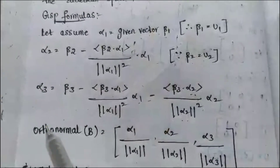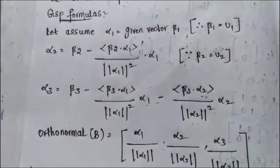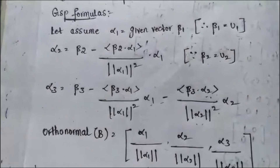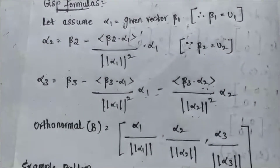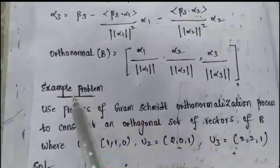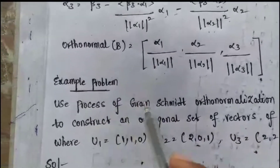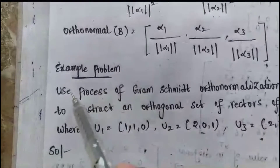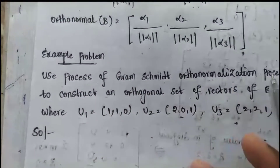Using the above formulas, we convert the problem from orthogonal vectors into orthonormalized vectors. Consider the example problem. In example 1, the question is: given, use the Gram-Schmidt orthonormalization process to construct an orthogonal set of vectors.